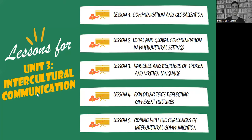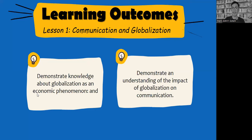Unit 3 is composed of five lessons: Lesson 1 - Communication and Globalization; Lesson 2 - Local and Global Communication in Multicultural Settings; Lesson 3 - Varieties and Registers of Spoken and Written Language; Lesson 4 - Exploring Texts Reflecting Different Cultures; and Lesson 5 - Coping with Challenges of Intercultural Communication. To start with Lesson 1, our learning outcomes are: to demonstrate knowledge about globalization as an economic phenomenon, and to demonstrate an understanding of the impact of globalization on communication.